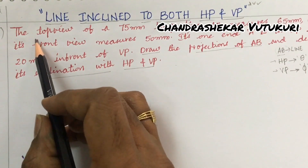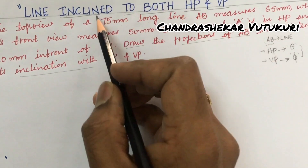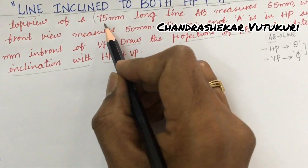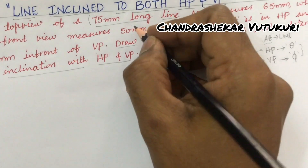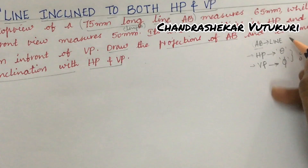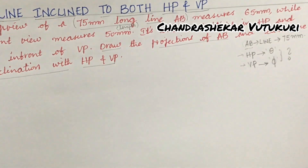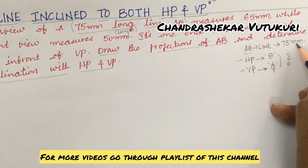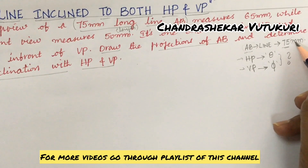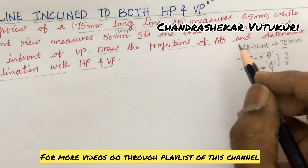Let us look at whether the length of the line is given or not. Yes — the top view of a 75 mm long line AB. Do not confuse: 75 mm is not the top view; it is the length of the line AB. The length of the line AB given in the problem is 75 mm. Sometimes the unit will be missing in the problem — by default, if it is 75, it is said to be millimeters. You are not supposed to write units next to the value in the answer booklet or drawing sheet.